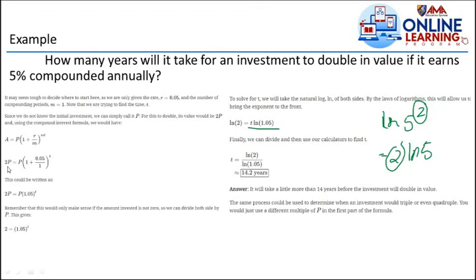Remember this would only make sense if the amount invested is not 0, so we can divide both sides by P. This gives, cancel the P, we have 2 equals 1.05 raised to t. If you look at it, dear students, there are some algebra concerns or equations where what we're looking for is in the exponent. Like here, it's in the exponent.